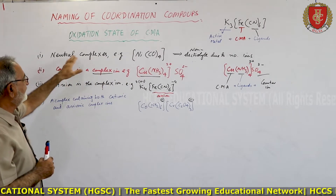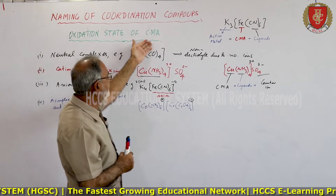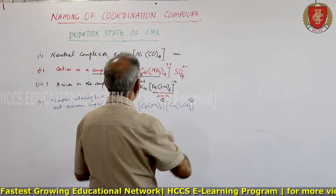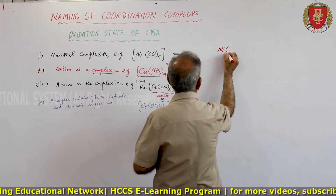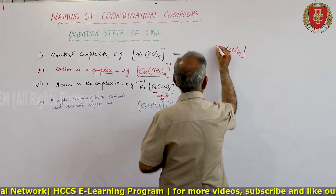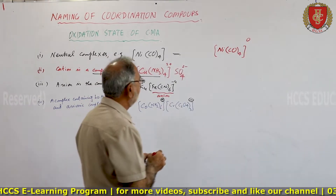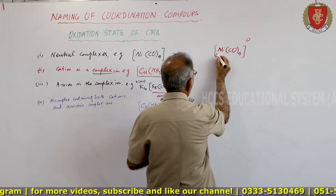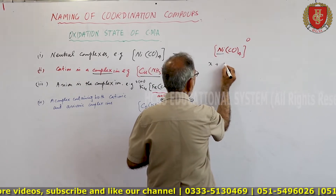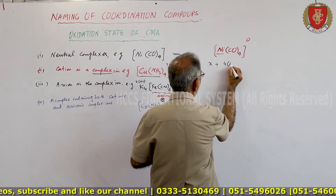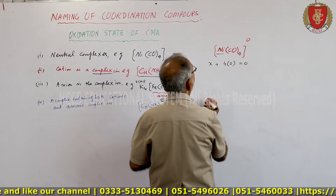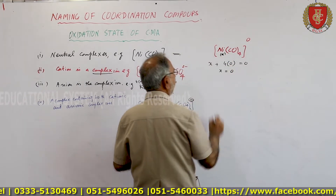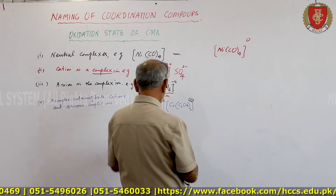To find the oxidation state of the central metal, consider Ni(CO)4 — this is neutral. If the oxidation state of Ni is x and CO has charge 0, then x + 4×0 = 0, so x = 0.